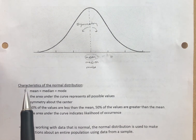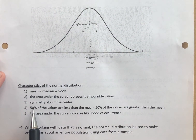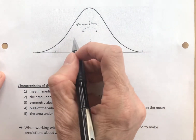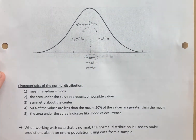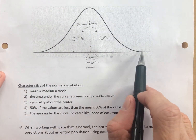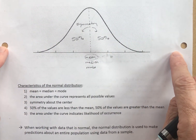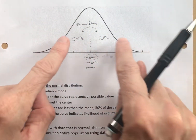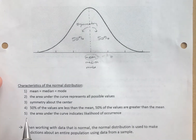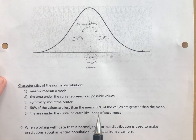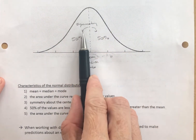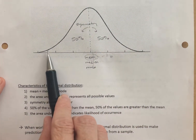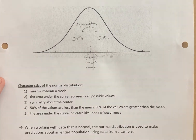Half of the values — 50% — are less than the mean, and half of the values, or 50%, are greater than the mean. All values fall under this curve, which goes out forever, so 100% of the data is under this curve. The area under the curve indicates the likelihood of occurrence — it's 50% likely that you are less than the mean, and 50% likely that you are above the mean.